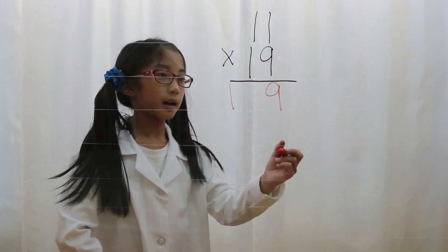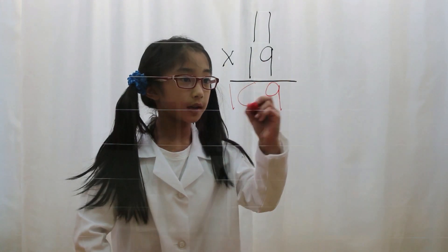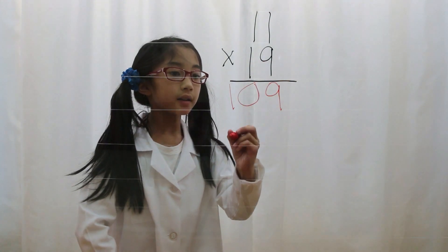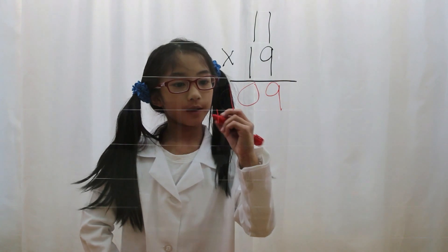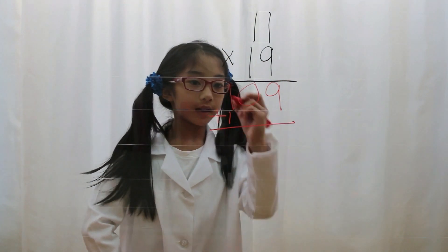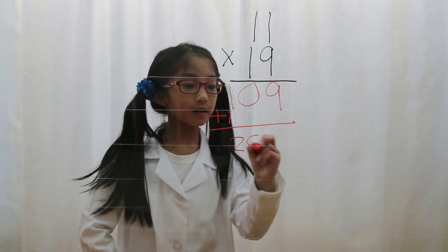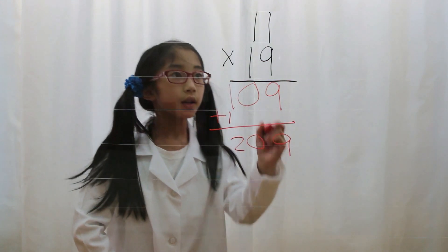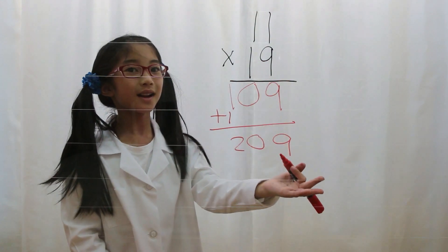Then you add up 1 plus 9, which is 10. But you only put a 0, and then you carry over a 1. Plus 1, and 1 plus 1 is 2. Bring the 0 down, bring the 9 down. 11 times 19 is 209.